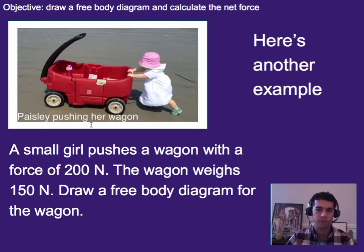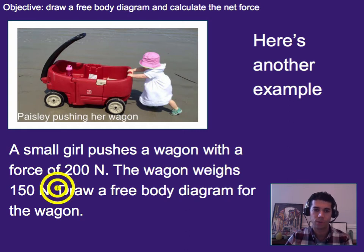Alright, let's have one more example. This one's a little bit more complicated. We have a little girl pushing a wagon. So a small girl pushes a wagon with a force of 200 newtons. And the wagon weighs 150 newtons. I want you to draw the free body diagram for the wagon. Go ahead and pause. See if you can do it on your own.